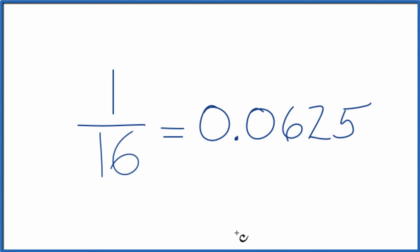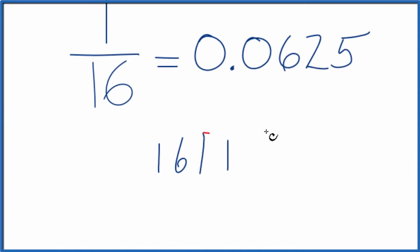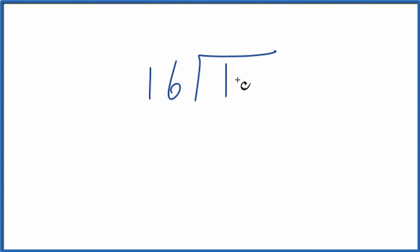The other way is we could do this longhand. We could say we have 1 and we want to know how many times 16 will go into 1. It doesn't go into 1, so let's say 0 point and make this 10. It doesn't go into 10 either. Let's put another 0 up here. We can make this 100.